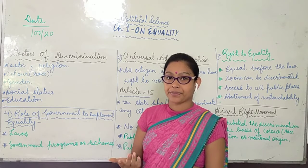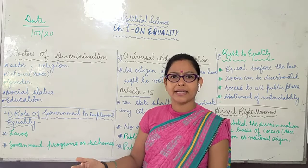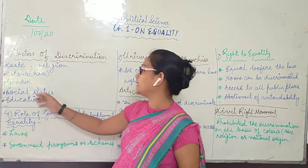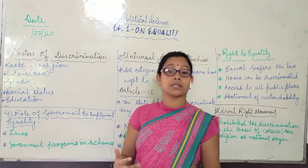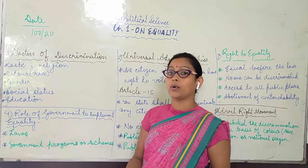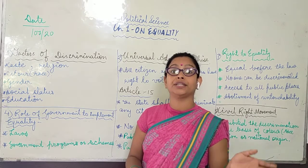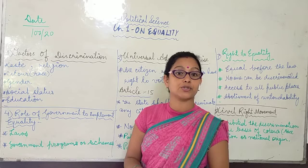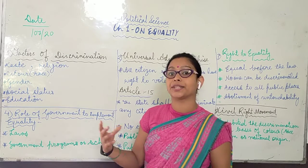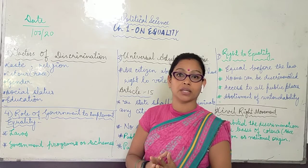Another example of gender discrimination is saying that boys should not cry, that crying is meant for girls only. The fourth factor is colour. We also discriminate on the basis of colour. In America, particularly in the 1950s and 60s, there was discrimination between blacks and whites — a clear difference between people based on their skin colour.